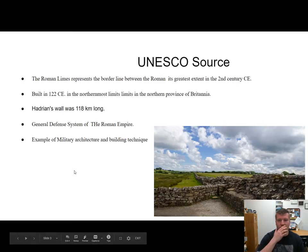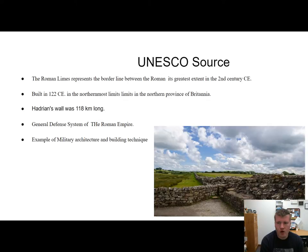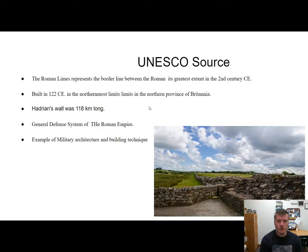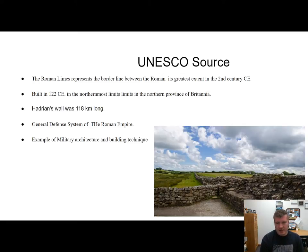So this is my UNESCO source. This is Hadrian's Wall — it was called the Frontiers of the Roman Empire. The Roman line represents the border between the Roman Empire and its greatest extent in the second century Common Era. This wall was built in 122 CE in the northernmost limits of the northern province of Britain. Hadrian's Wall was 118 kilometers long. This was the general defense system of the Roman Empire, and is also an example of military architecture and building technique.